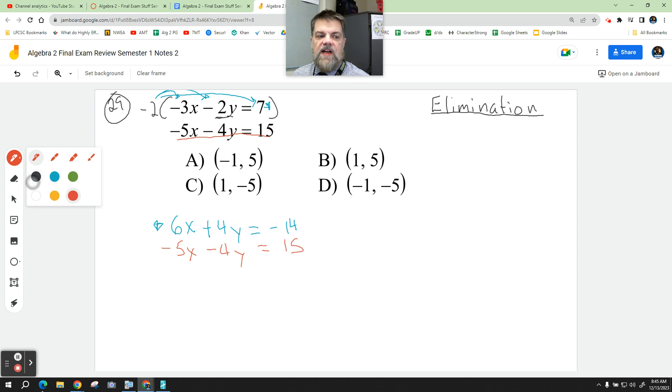Now, I add it vertically. 6x minus 5x just leaves me with x. 4y minus 4y just leaves me with 0. I don't need to write the 0 down. 15 minus 14 gives me 1. Look at that.